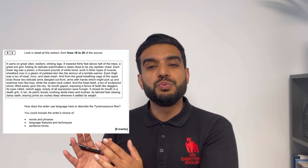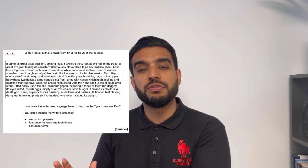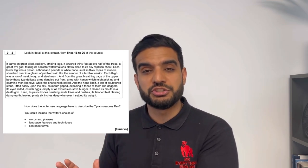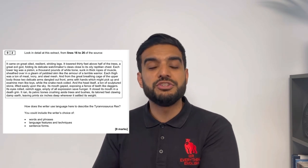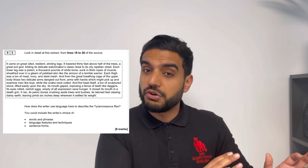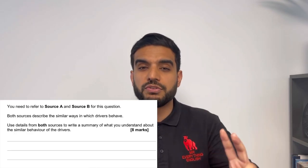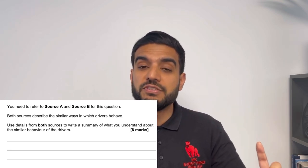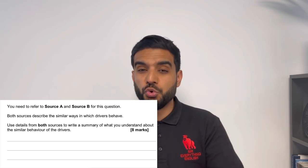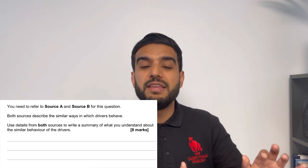Paper One Question Two is an eight-mark question — we spend 10 minutes and write two to three paragraphs. It's a language question: you pick out language devices and word phrases and discuss their effects. Paper Two Question Two is also eight marks and 10 minutes, but you only write two paragraphs. This time you are writing a summary of differences or similarities — not talking about language devices, simply summarising the text based on the question.